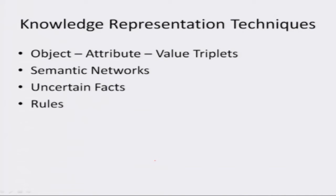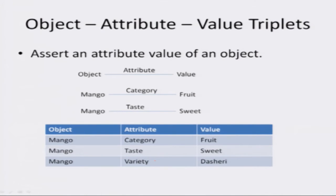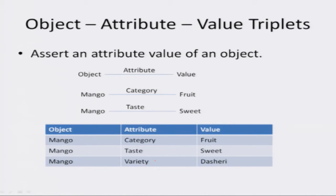Object-attribute-value triplets are used to represent facts about objects and their attributes. They assert an attribute value of an object and can also be represented graphically in the form: object, attribute, value. For example, if I wish to say that the category of mango is fruit, I can write it as mango has attribute category that has value fruit — so: mango, category, fruit.